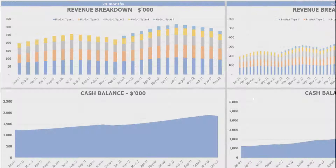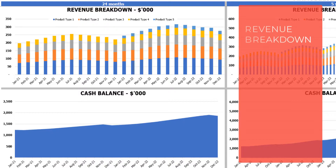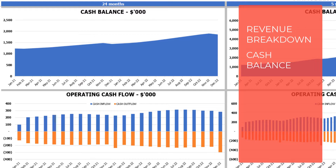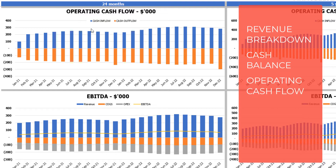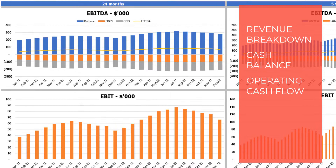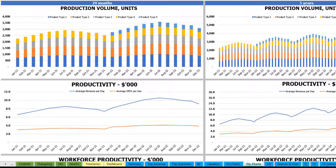On the financial charts tab you can see the main financial outputs in graphical form. On the left side you see charts for 24 months and on the right side for five years or 60 months. The top charts show revenue breakdown by product types. The next charts show cash balance for two years and five years. Then operating cash flow broken down by cash inflow and cash outflow. Next is the EBITDA breakdown — revenue, COGS, and OPEX — with the resulting EBITDA value shown as a yellow line by month.